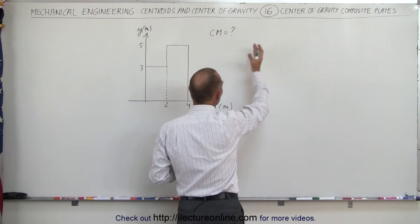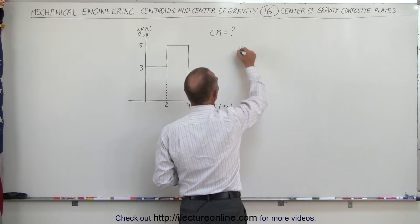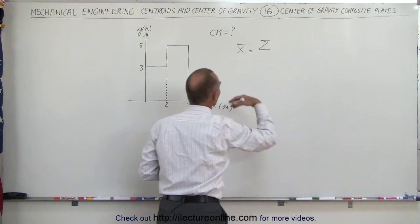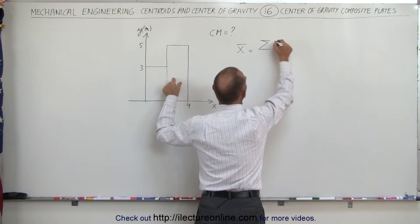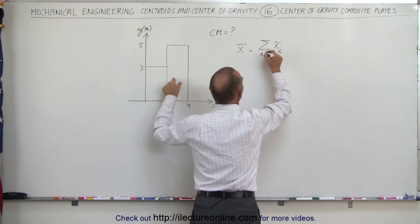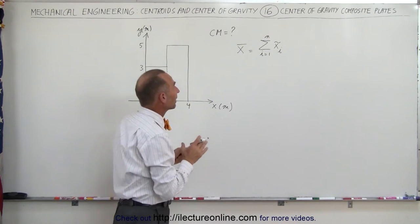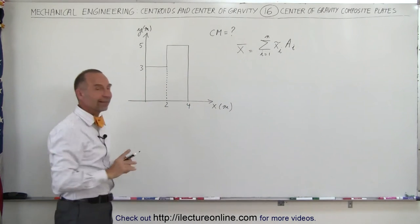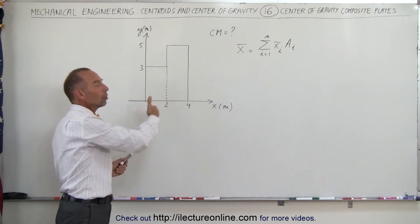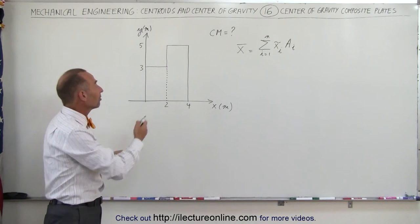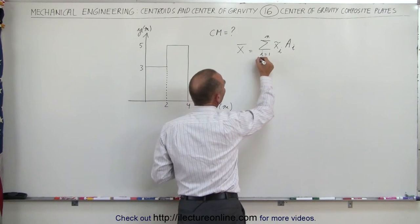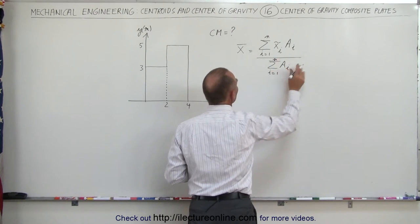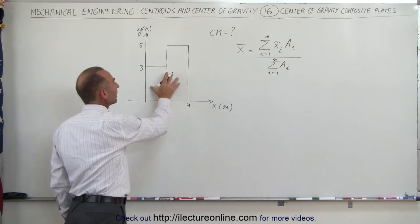The center mass — we need to find the x and y coordinates. The x coordinate of the center mass of the entire object equals the sum from i equals 1 to n of the x coordinate of each piece times its area, divided by the sum of the areas of each individual piece from i equals 1 to n. We assume these are thin plates with uniform thickness and density, so we use area instead of mass.